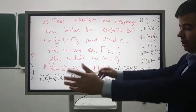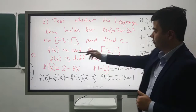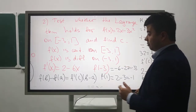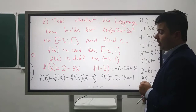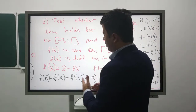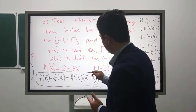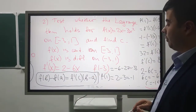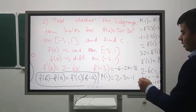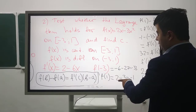If it satisfies the Lagrange theorem, the function is continuous and differentiable on the open interval (-3, 1). The derivative is 2 - 6x. To use the Lagrange theorem, we need to find the values of the function at the endpoints. f(1) = 2 - 3 = -1, and f(-3) = -6 - 27 = -33.